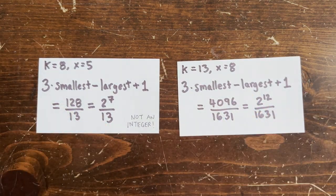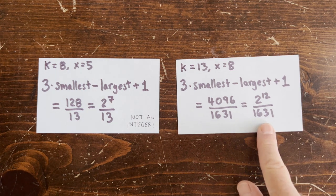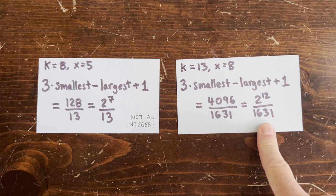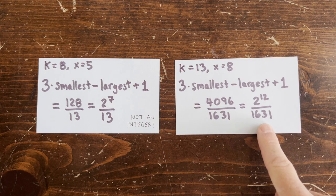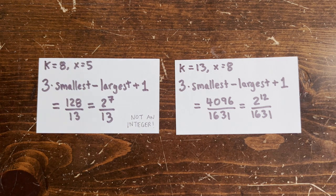And this is not a fluke — the same thing happens with other high loops. Here's the one for k equals 13, x equals 8: 3 times the smallest minus the largest plus 1 gives us 2 to the 12th over 1631. It happens every time. In fact, we always get 2 to the k minus 1 over 2 to the k minus 3 to the x.